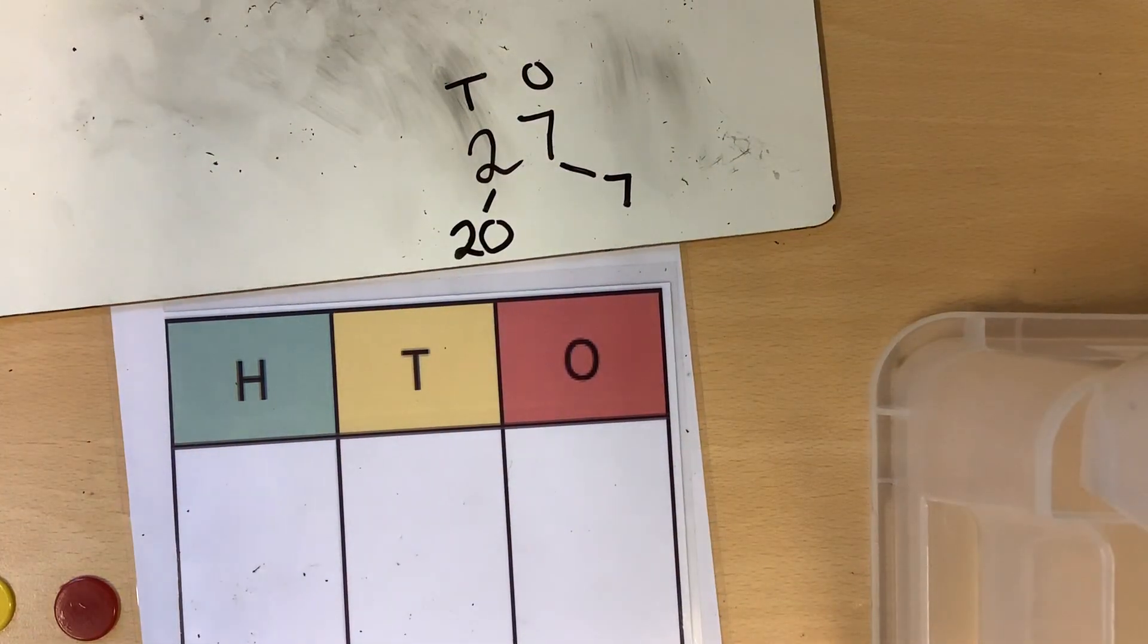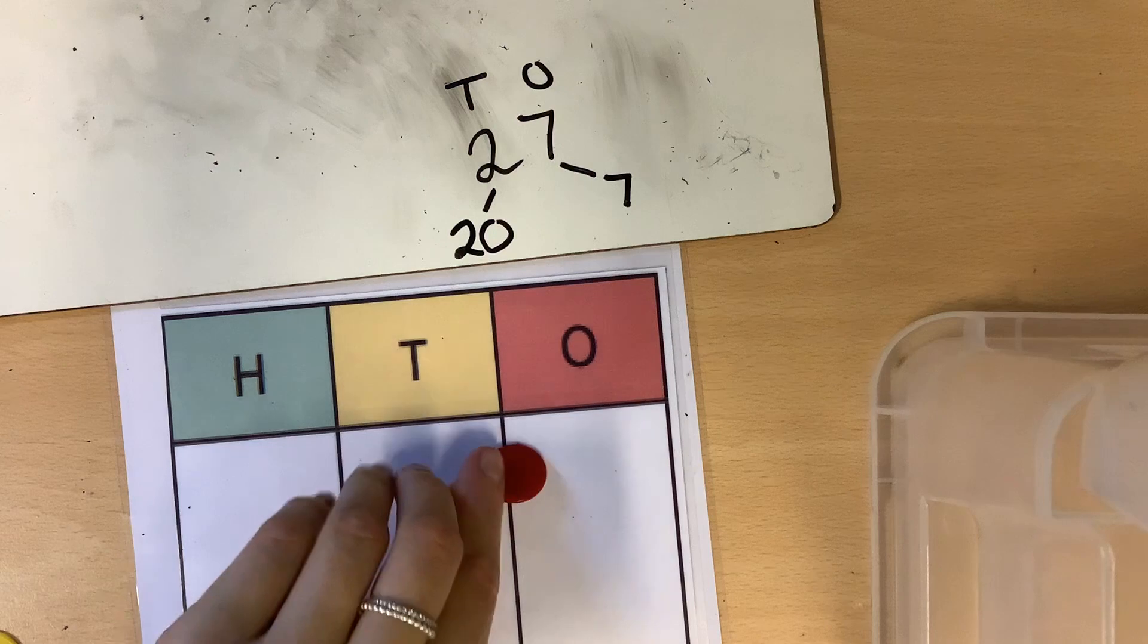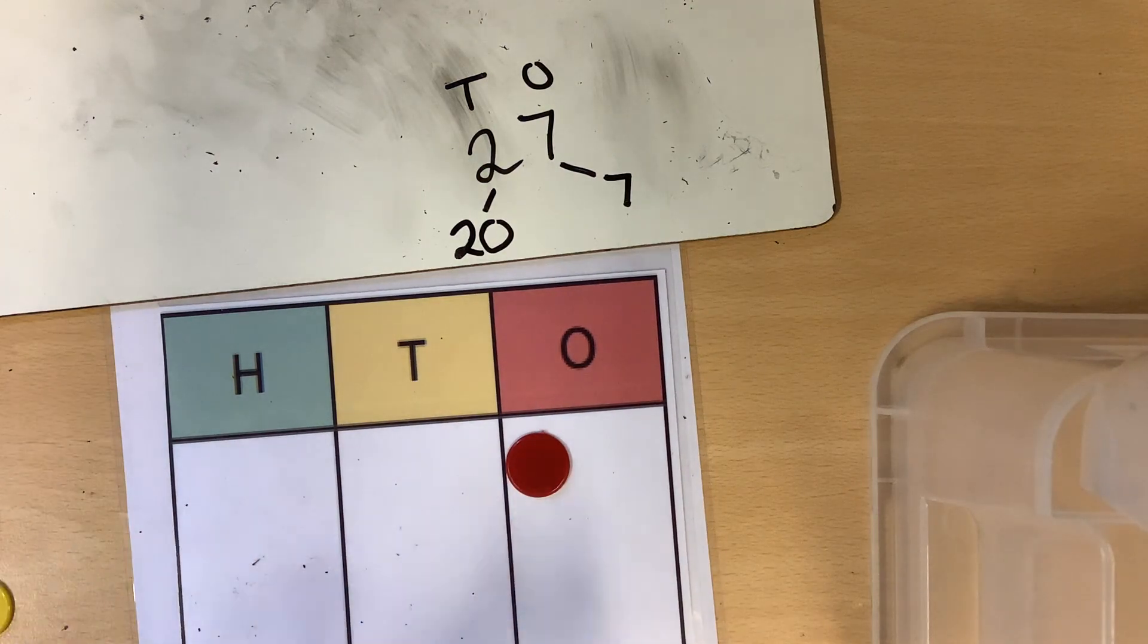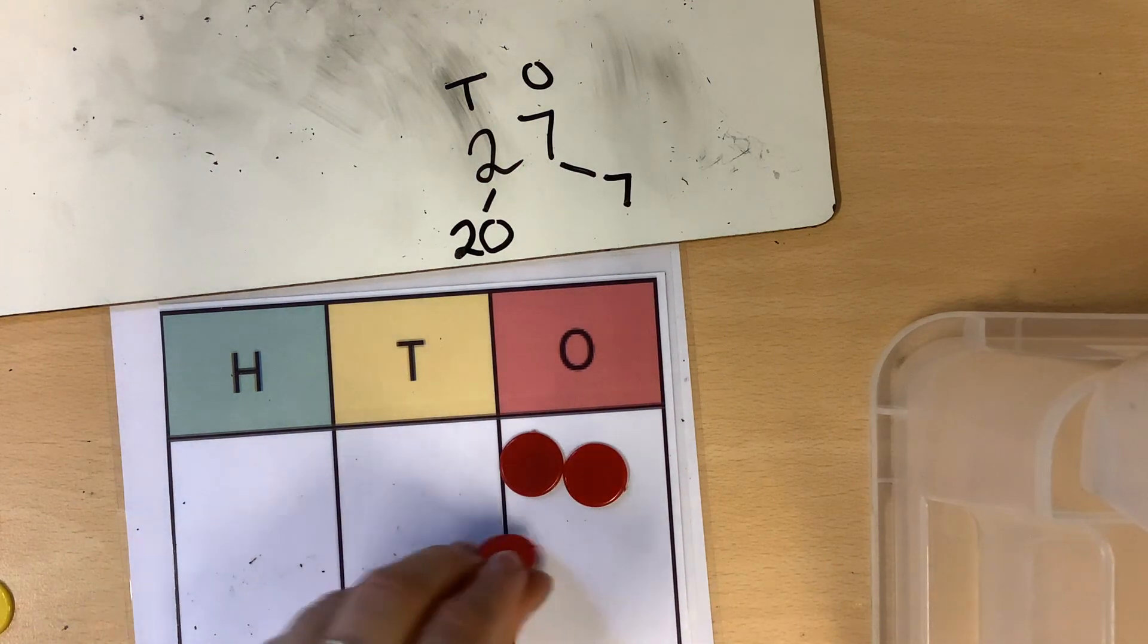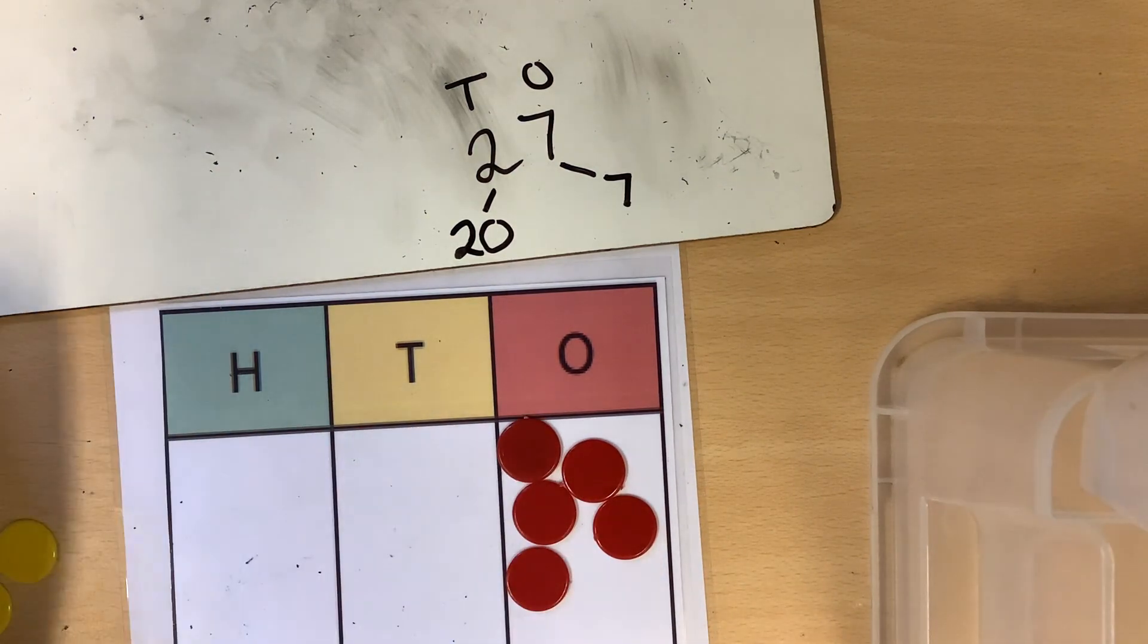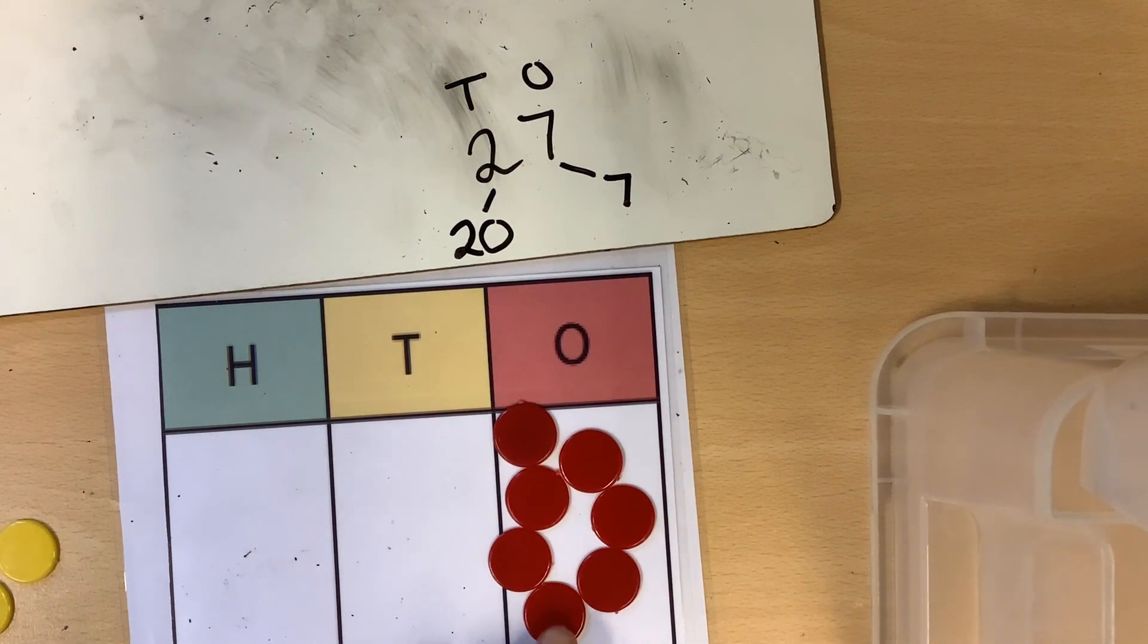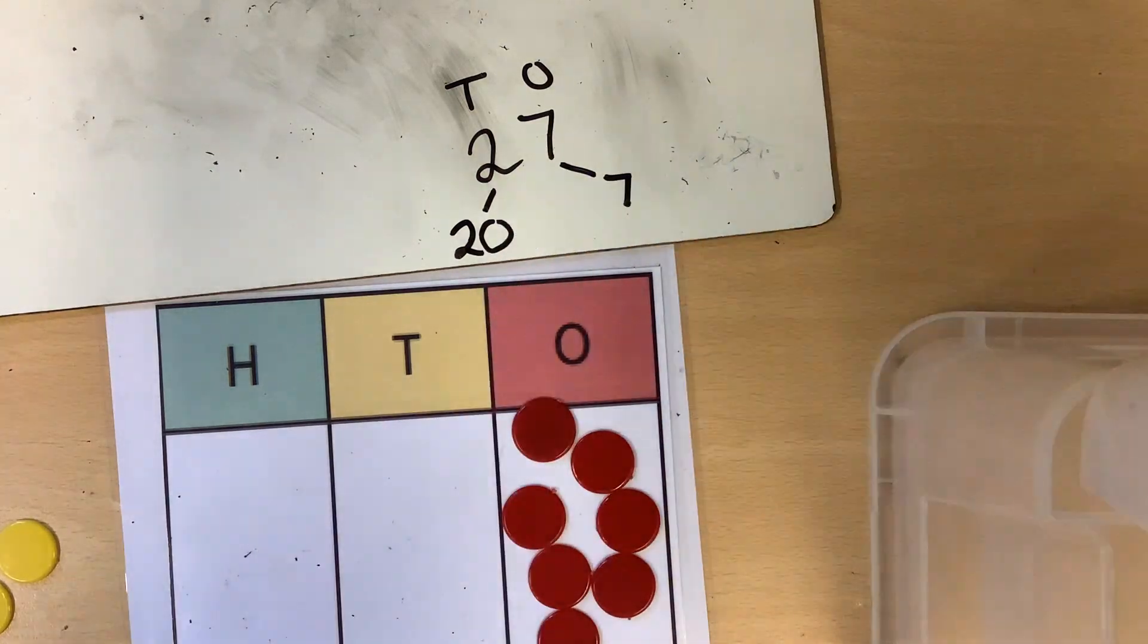I might draw my place value headings to help me. Now I'm ready to make 7 ones. I might count in my 2s. 2, 4, 6. 2 more would be 8, so now I just need 1 more. 6, 1 more, 7. There's the 7 ones.